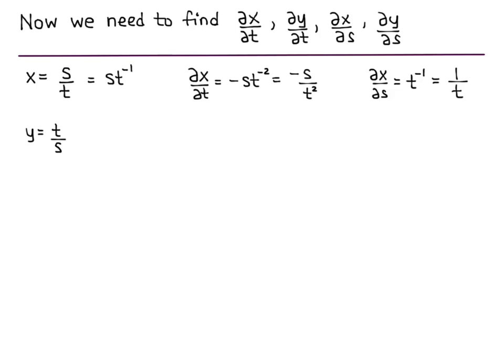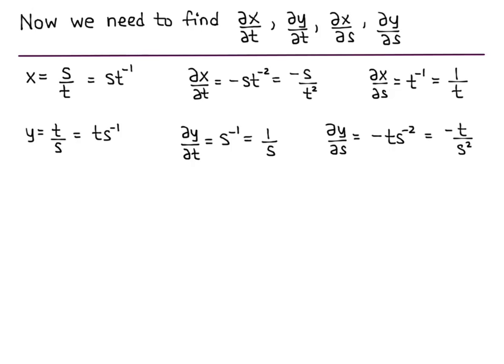Now, y equals t over s, which is equivalent to t times s to the negative 1. So, partial y partial t equals s to the negative 1, which is 1 over s. Partial y partial s equals negative t times s to the negative 2, which equals negative t over s squared. Notice that we're using a lot of algebra, particularly laws of exponents, to simplify as we go.